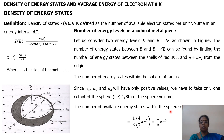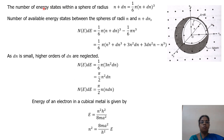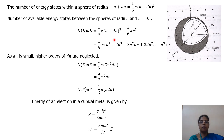So the number of available energy states within the sphere of radius N is equal to 1/8 of the volume: (1/8) × (4/3)πN³ = (1/6)πN³. Similarly, the number of energy states within the sphere of radius N+dN is (1/8) × (4/3)π(N+dN)³. To find the number of energy states between the shell of radius N and N+dN, we subtract the smaller volume from the larger. Expanding (N+dN)³ and simplifying, we get N(E)dE = (π/2)N² dN.